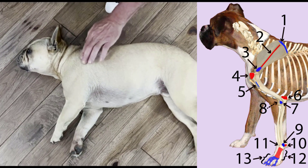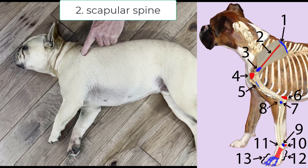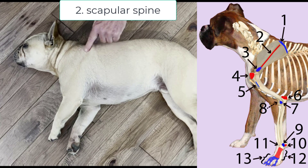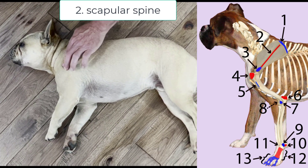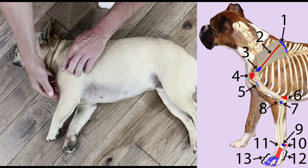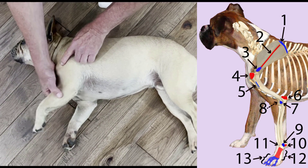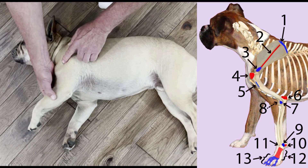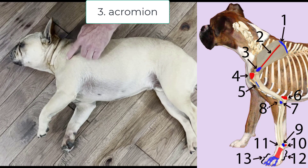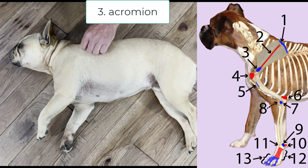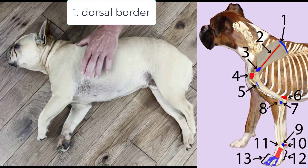The first thing we're going to feel for is the scapula, and we're going to feel the scapular spine running the length of the scapula. You can go back and forth and feel that, and you come down to its distal point. The key to palpating is to keep moving the limb. When you feel this distal portion of the scapular spine, that's the acromion. Then we can come back up dorsally along the scapular spine to the dorsal extent of the scapula, and that's the dorsal border.